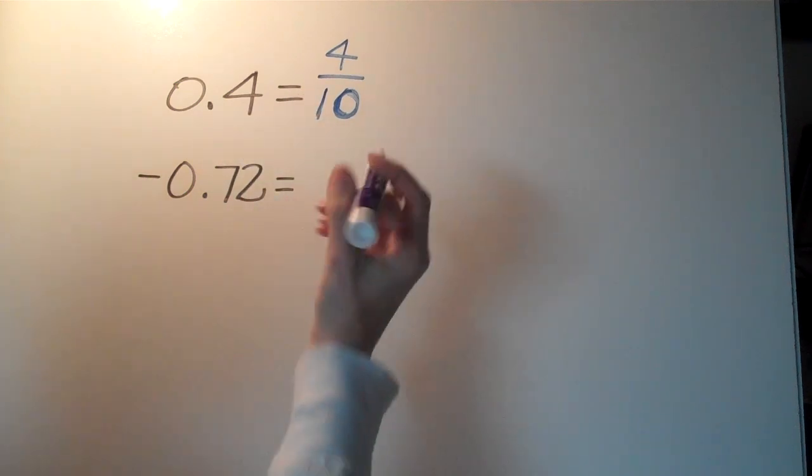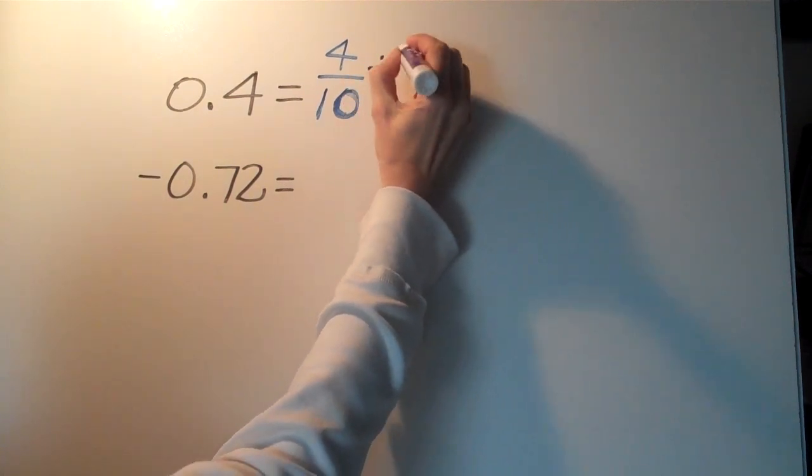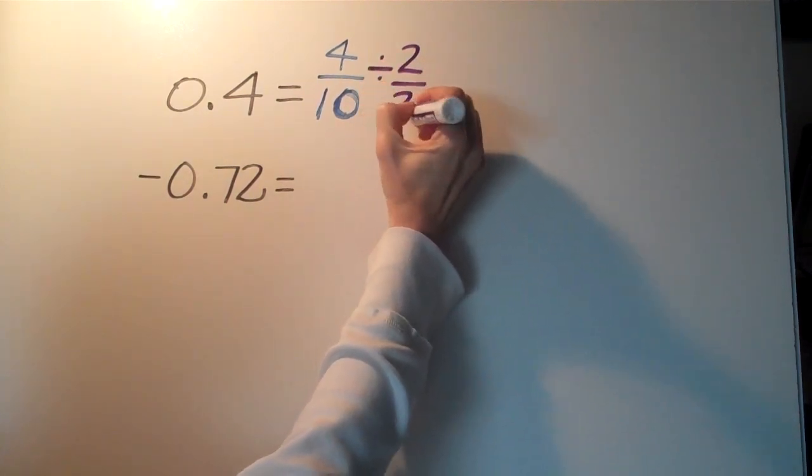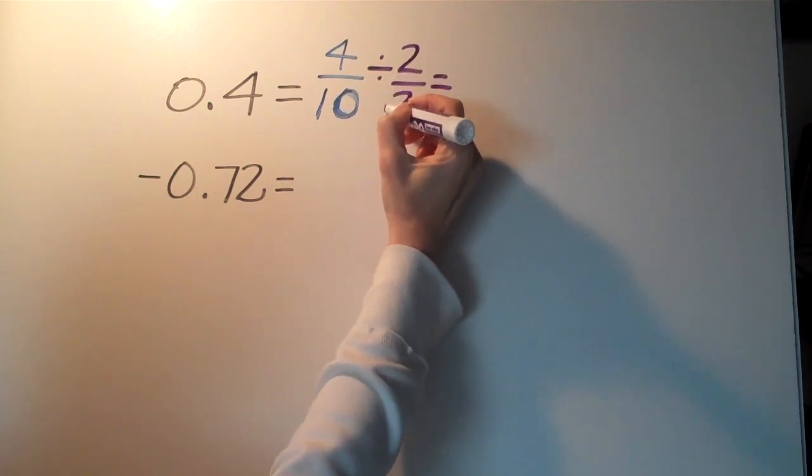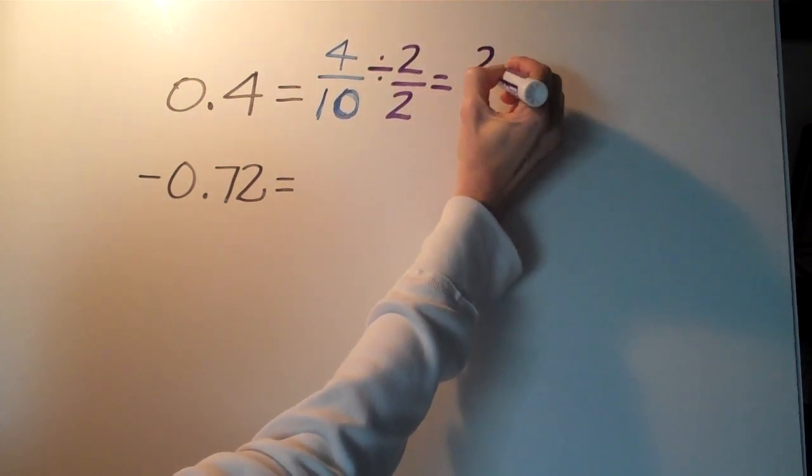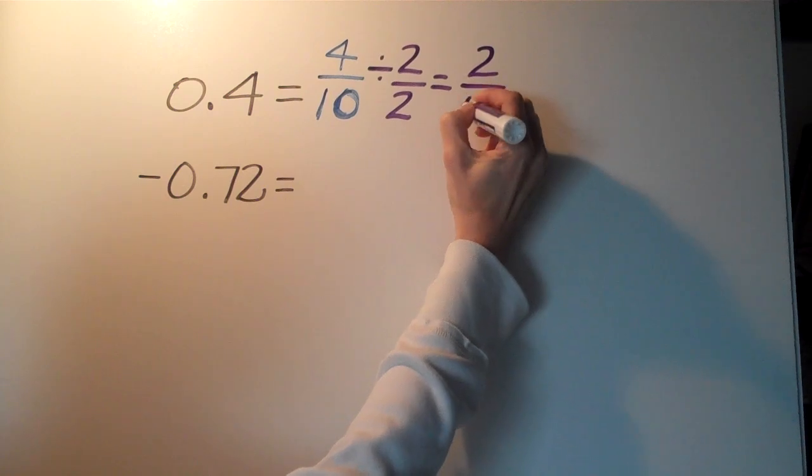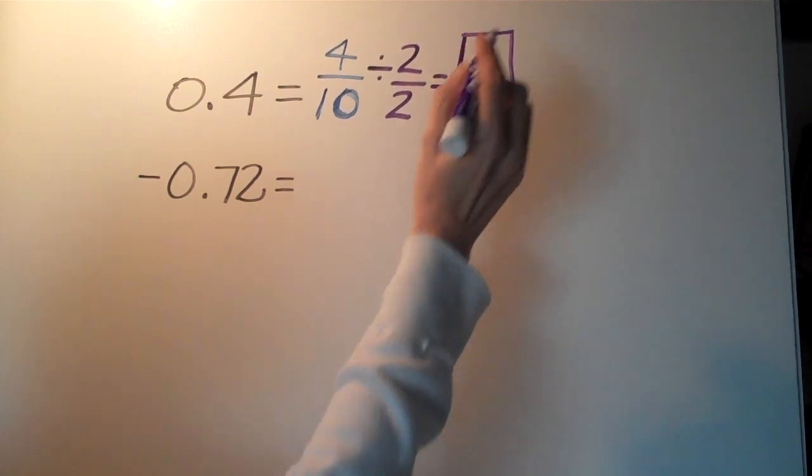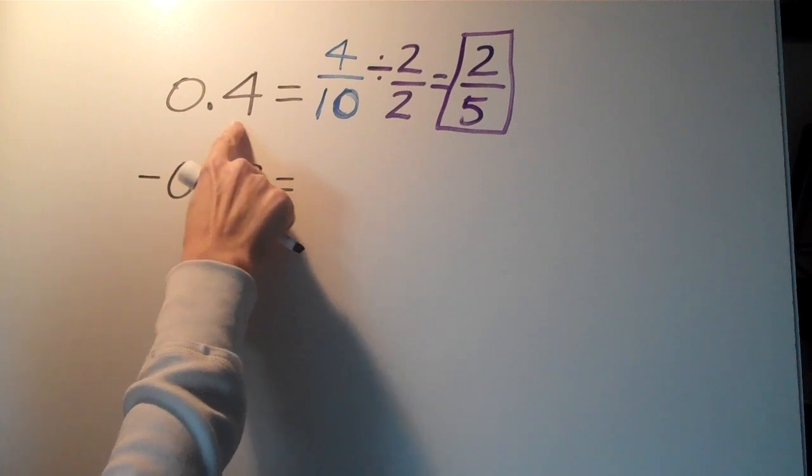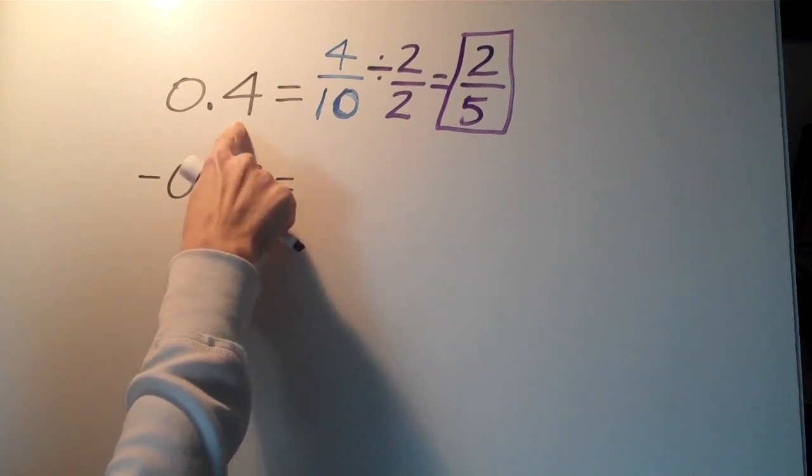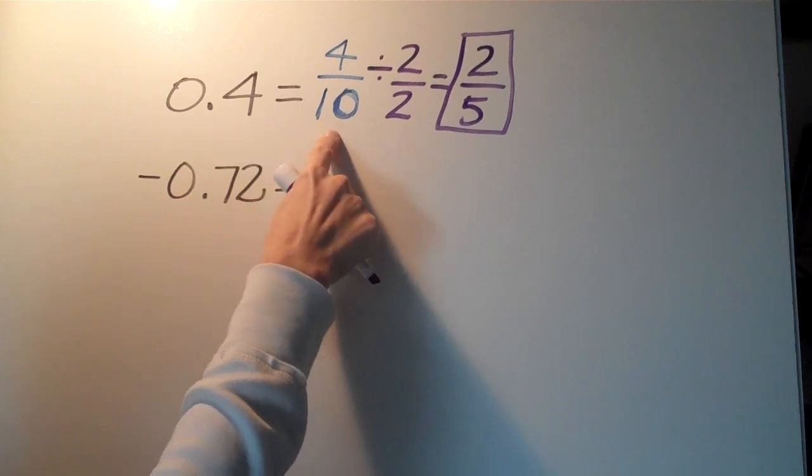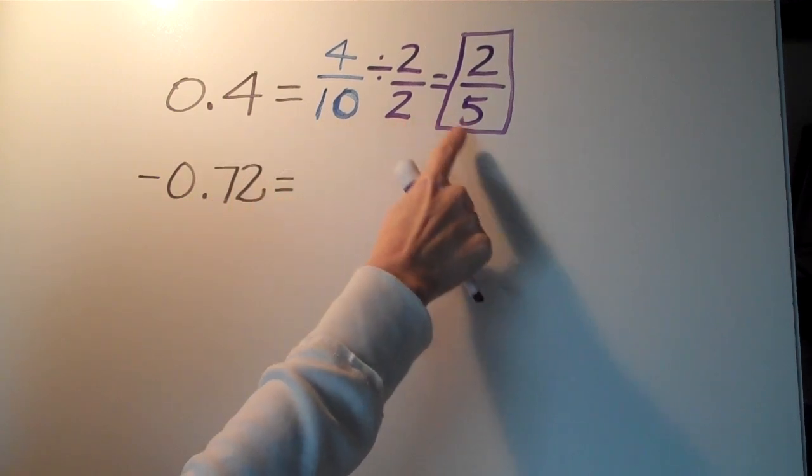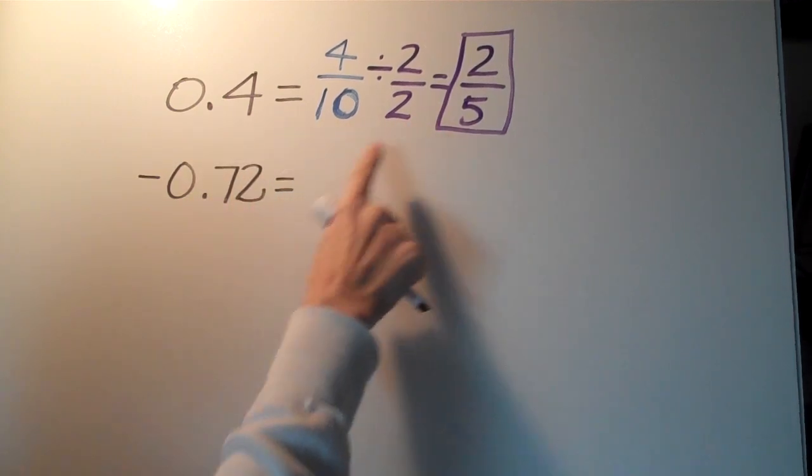And then if we just wanted to reduce that, which we always want to reduce, it would be 4 divided by 2. We can divide both these numbers by 2 and it would simply be 2 over 5, and that's pretty much it. So to go from 4 tenths as a decimal to make it into a fraction, read the place value, put it over that number, simplify it, and you get your fraction as 2 fifths.